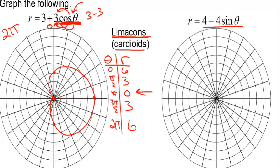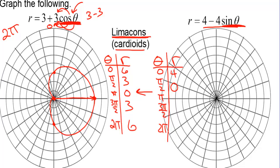Now we have r equals 4 minus 4 sine theta. The first one was off to the positive x-axis side because cosine dictates x. This one — the long end should be along the y-axis. Counting by pi over 2's: 0, pi over 2, pi, 3 pi over 2, 2 pi. Sine of 0 is 0, so r is 4. Pi over 2: sine is 1, so 4 minus 4 is 0. That tells me it's a cardioid, because we get an r that is 0.